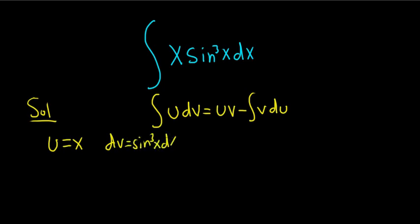Usually a general rule for integration by parts is when you pick your u, the derivative of u should be a simpler function. So if you let u be x, its derivative is just 1, so it's simpler. But if you let u be sine cubed, its derivative is a mess because you have to use the chain rule. So here du equals dx.